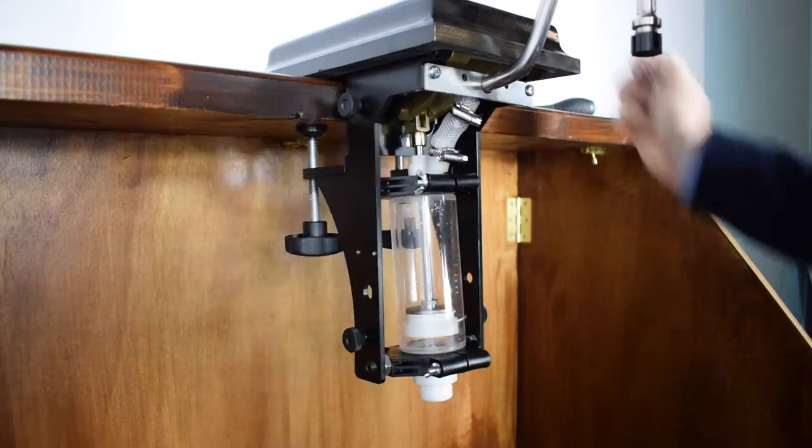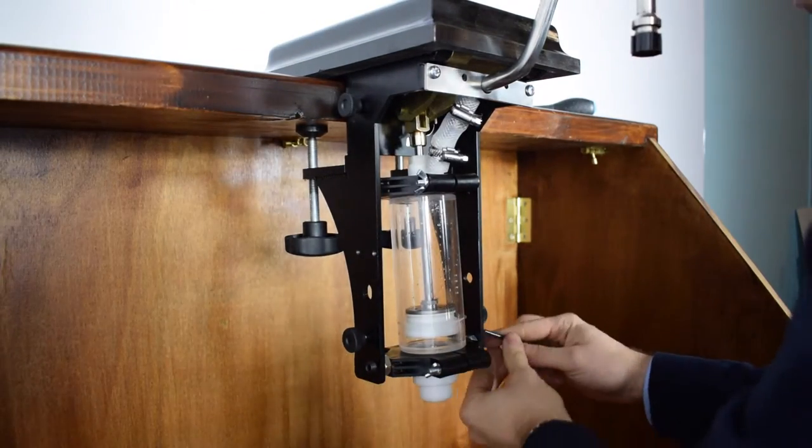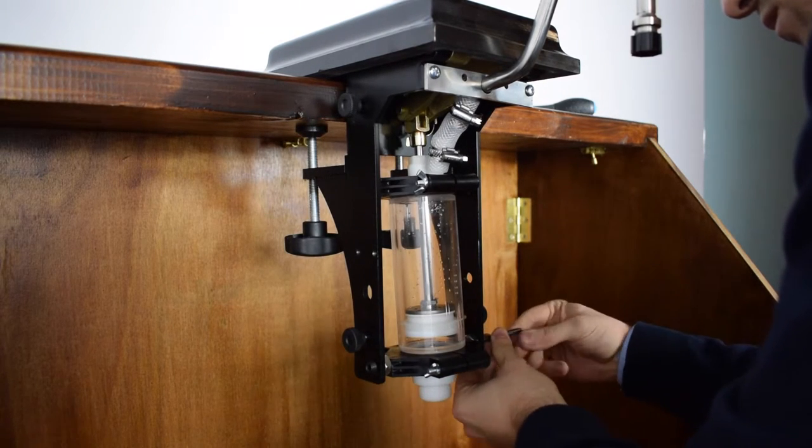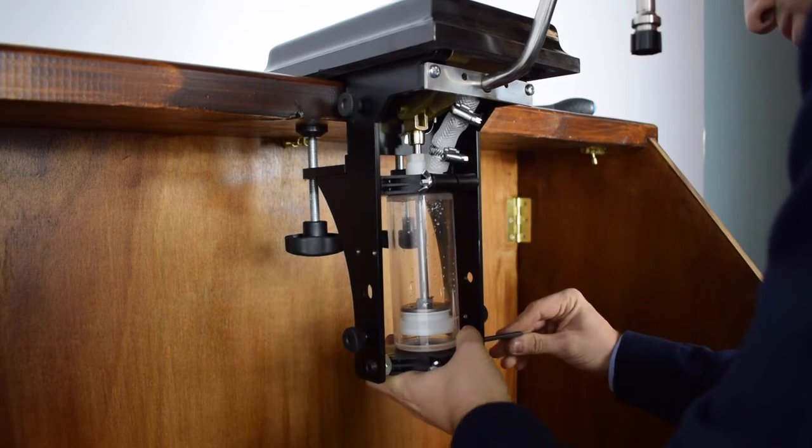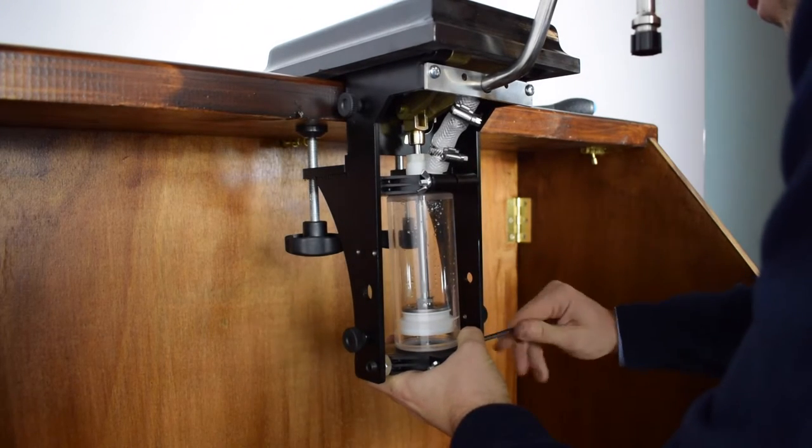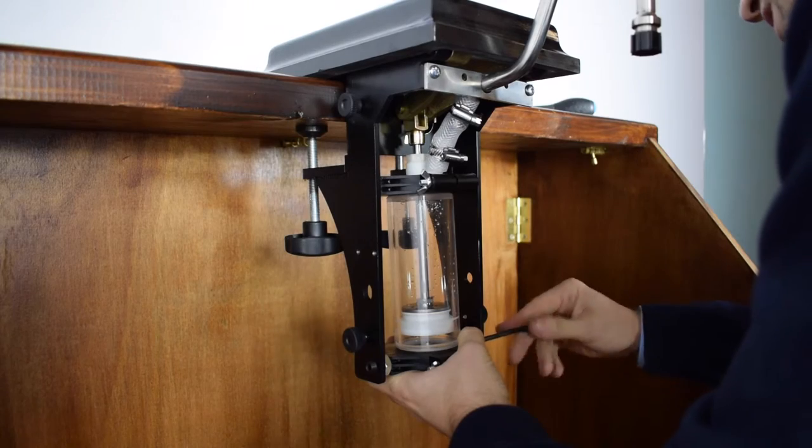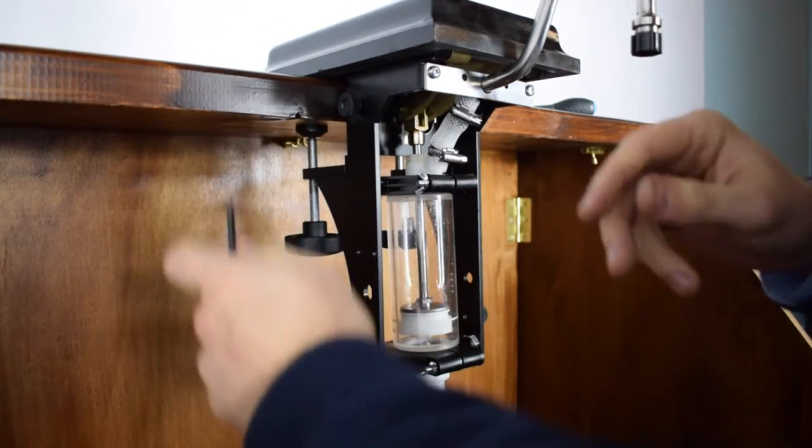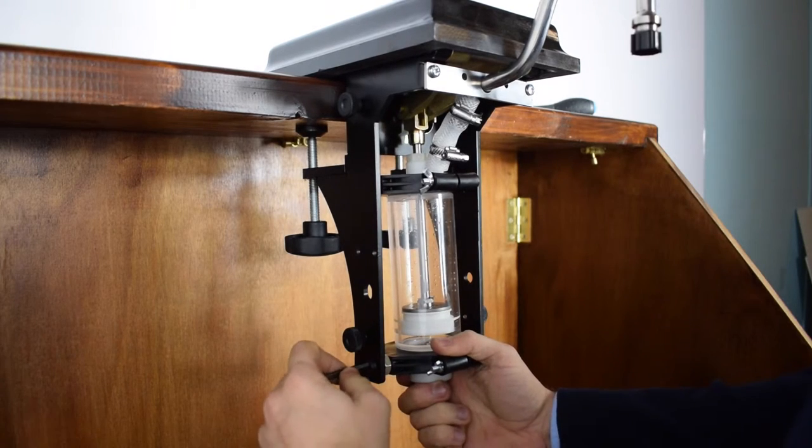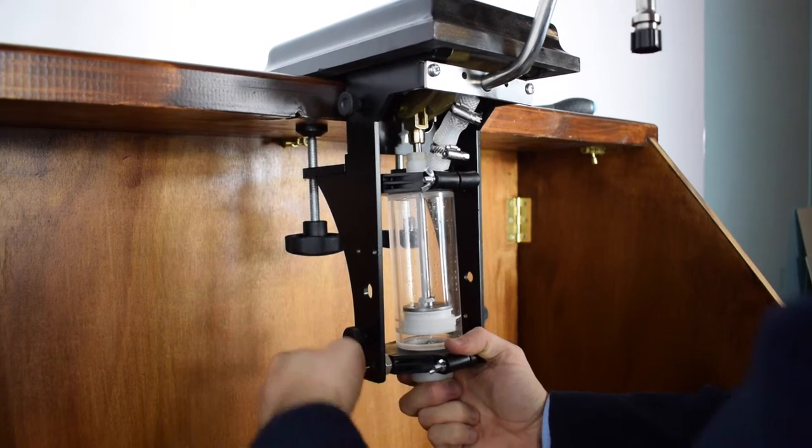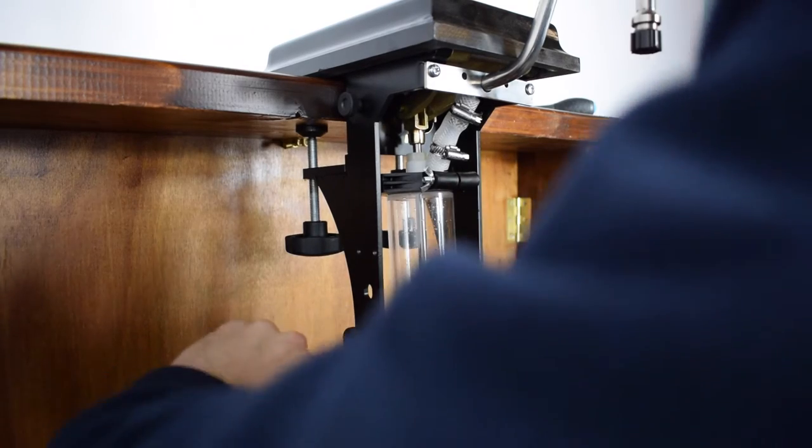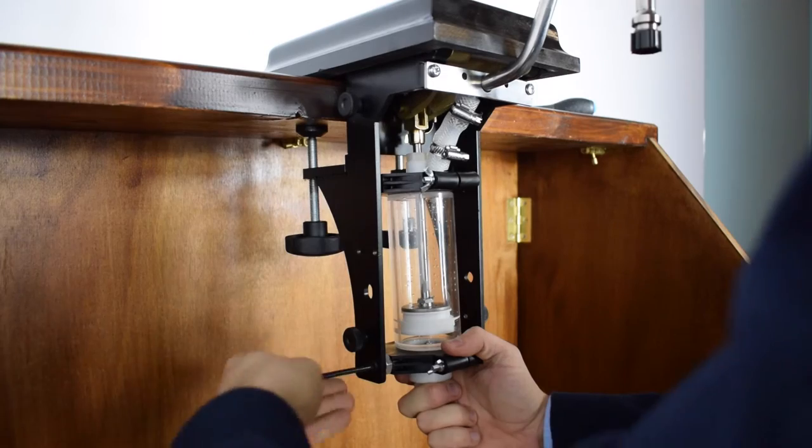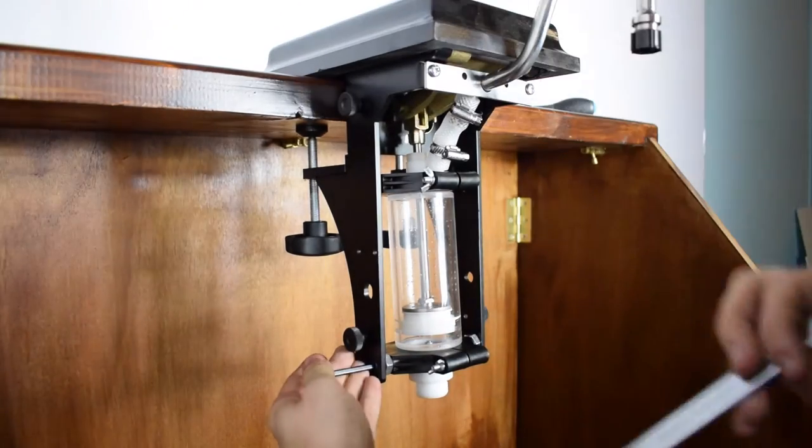And step three is to put the pivoting points back in. Make sure the pivoting points don't go past the edge of the frame, i.e. flush. And lock it down tight.